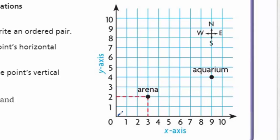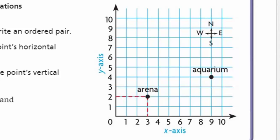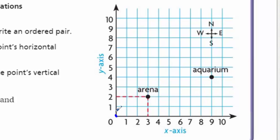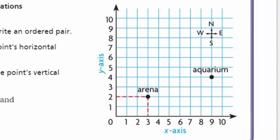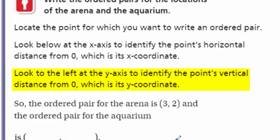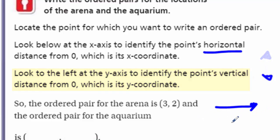It says: write the ordered pairs for the locations of the arena and the aquarium. Locate the point, then look below at the x-axis to identify the point's horizontal distance from zero — that's its x-coordinate. I can see the arena is right there on the three. Then look to the left at the y-axis to identify the point's vertical distance — that's your north and south, your up and down.